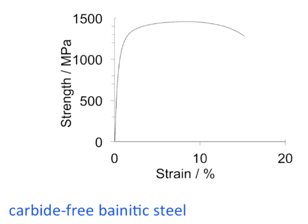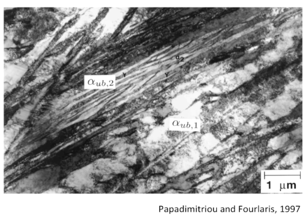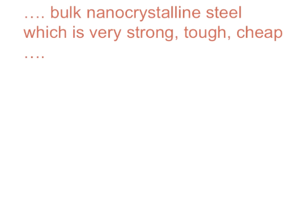Here is a stress-strain curve that meets the production requirements of the continuous annealing line. But if we want even higher strength, a micrograph published in 1997 showed that transforming first at 420°C then suddenly changing to 270°C gives a much finer structure — of the order of much less than half a micrometer at the lower temperature. The lower the transformation temperature, the thinner the plates. Imagine designing a steel which is nanocrystalline, very strong, tough, and cheap.